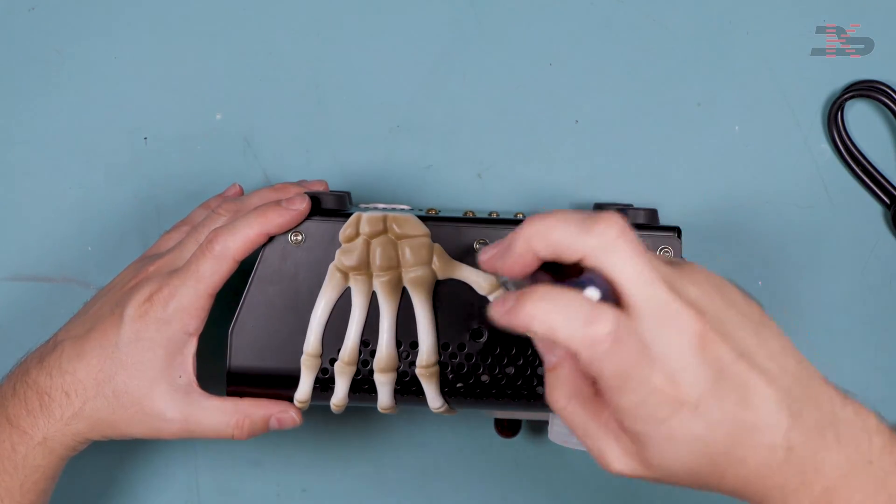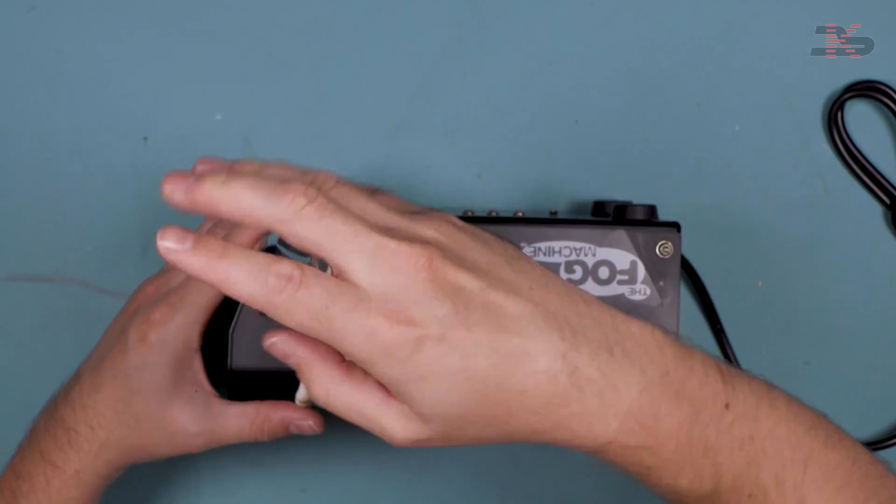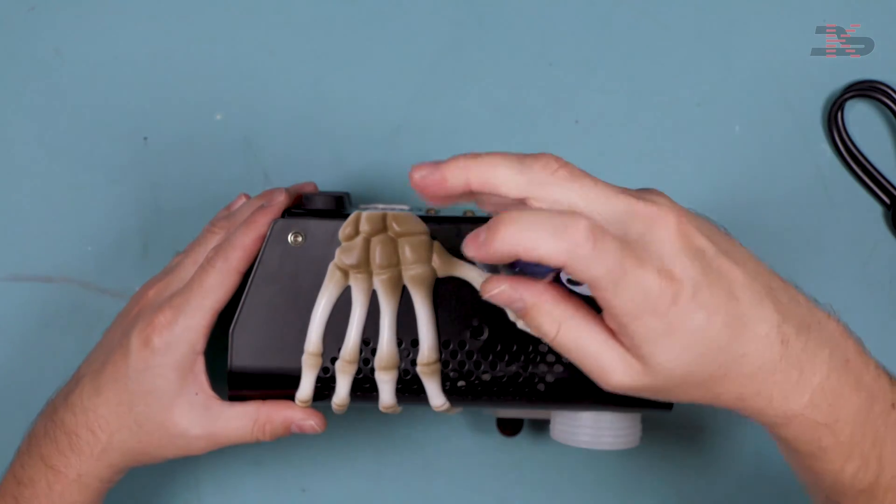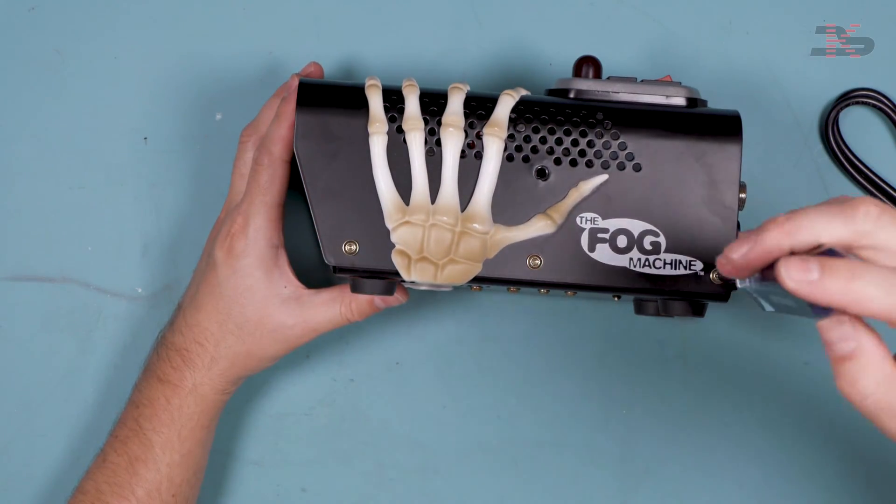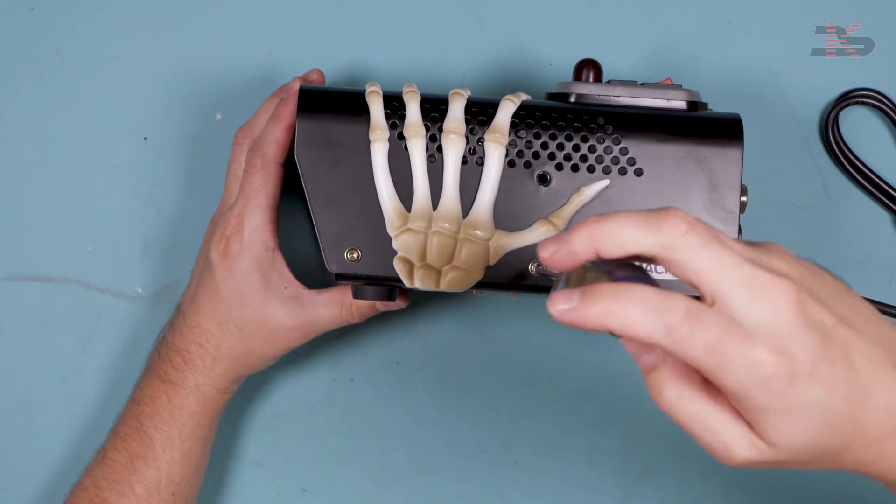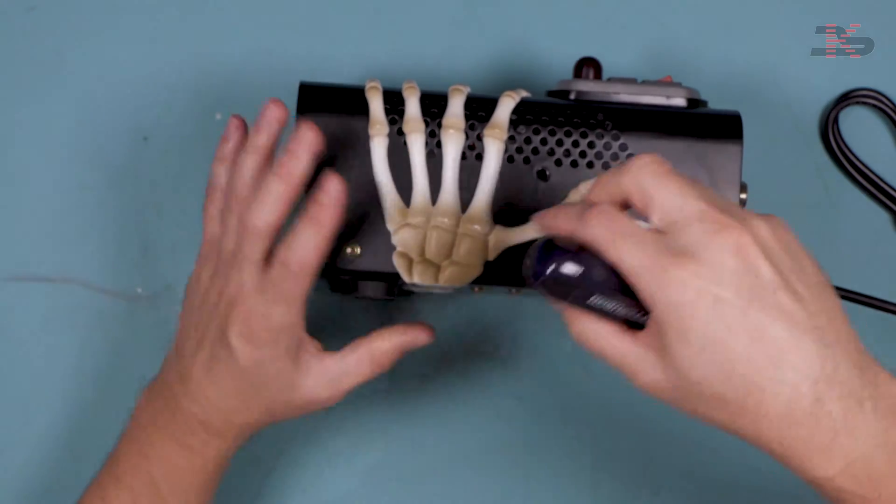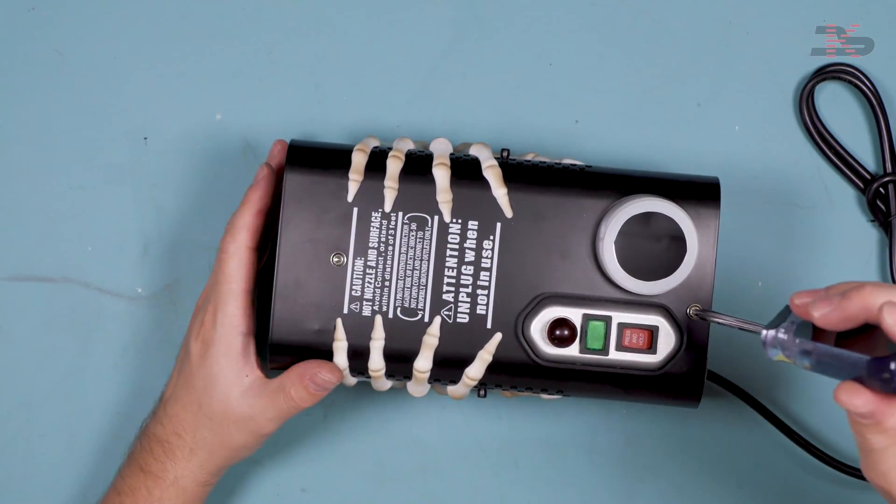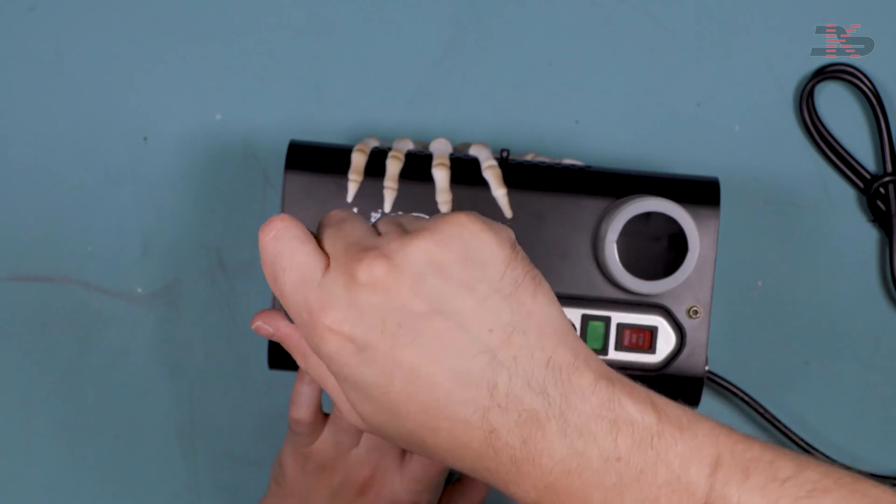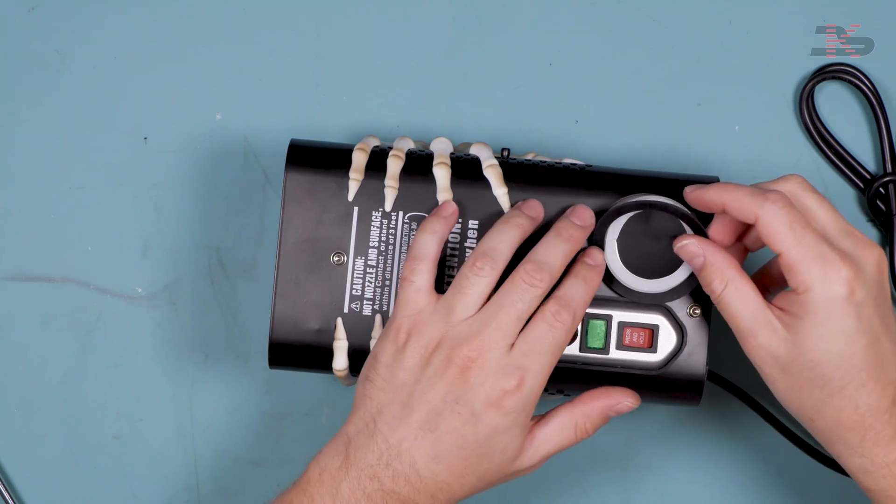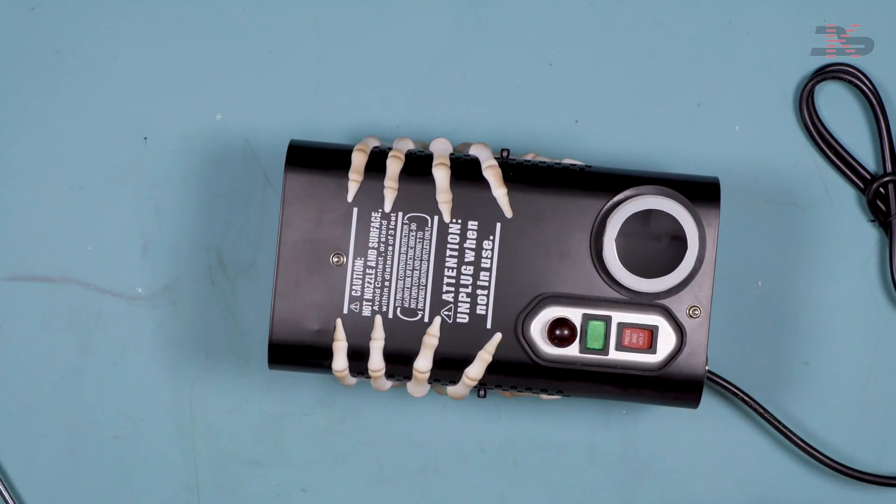Once you get all the screws in, you can go ahead and tighten them down all the way. And you can put the gasket back on and the cap.